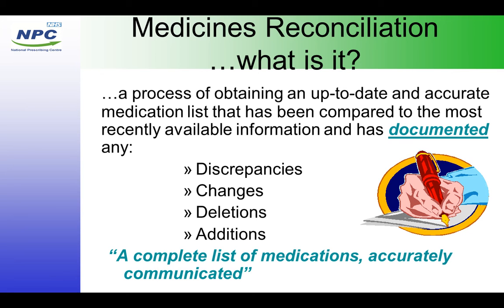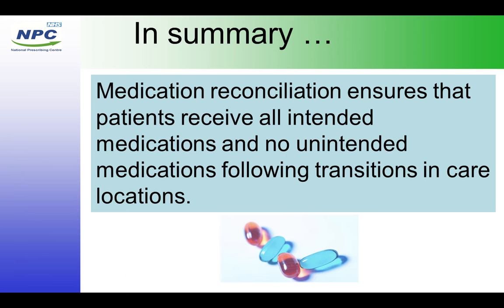Often when a patient is clerked into hospital you have a list of tablets — it'll say Atenolol, Aspirin, Simvastatin and Amlodipine — but there are no doses and no frequencies. As a pharmacist it's really important that we accurately record what the patient was on prior to admission. Basically we want to ensure that patients receive all intended medications and no unintended medications following a transition in care location.